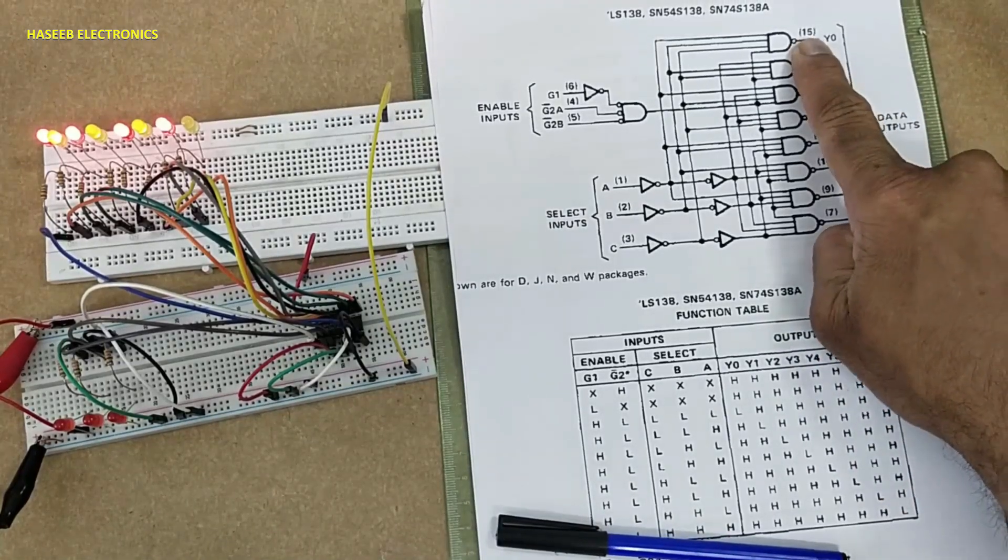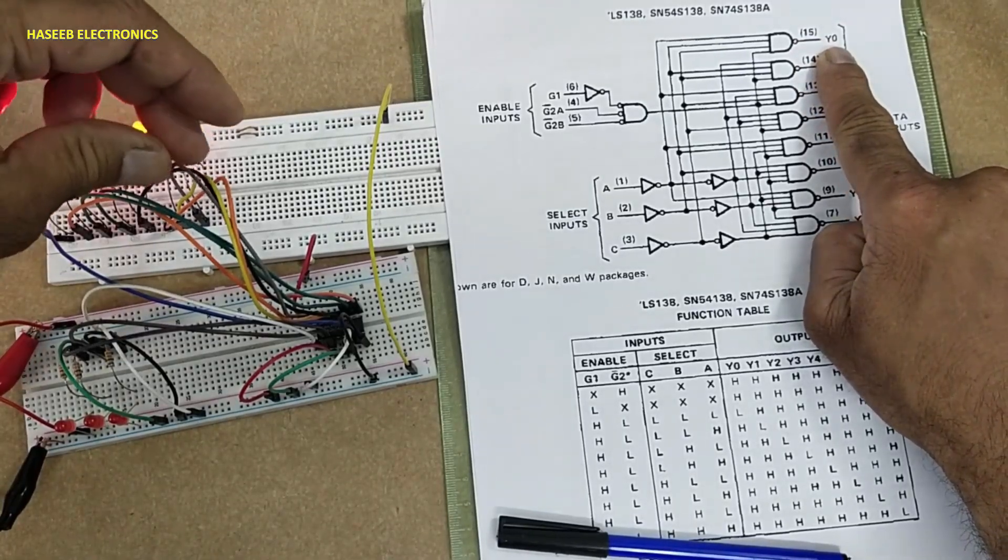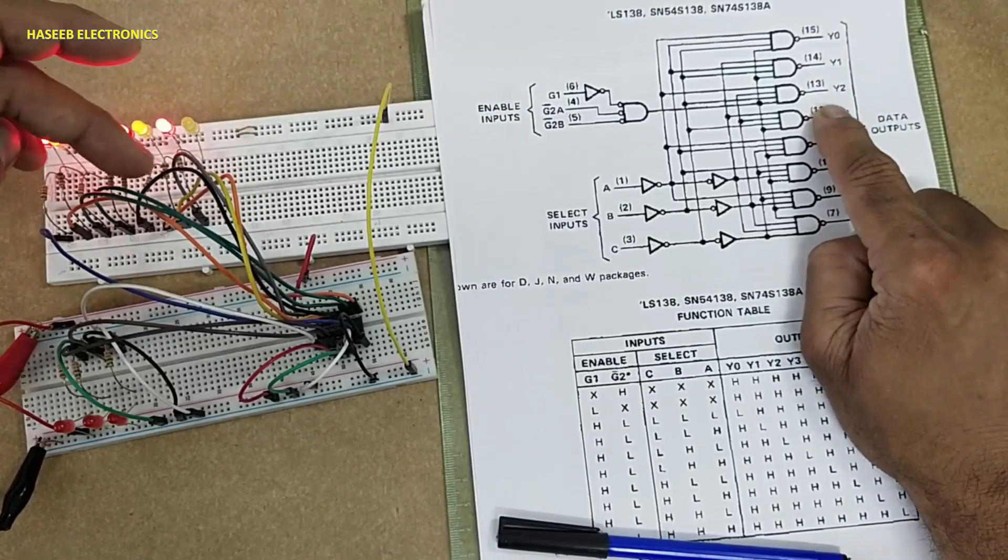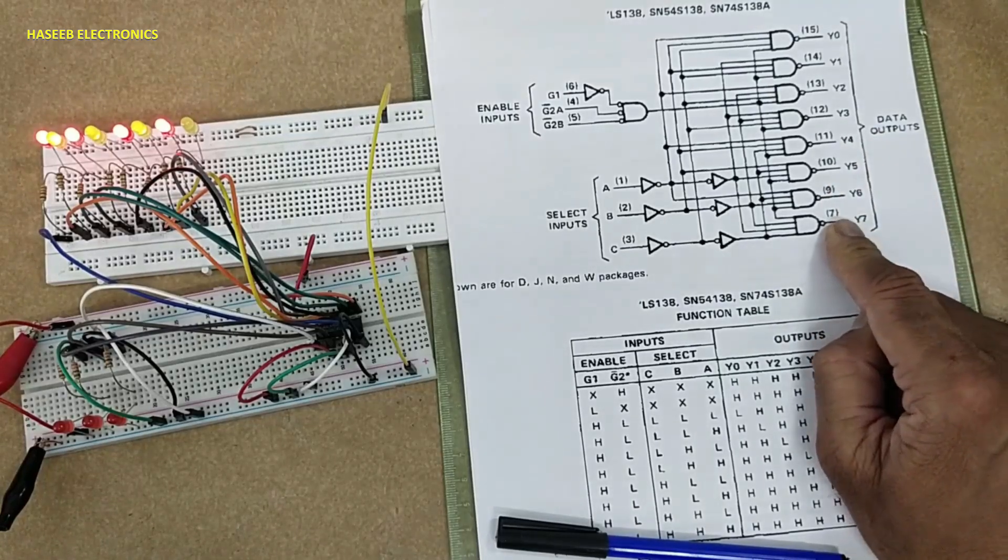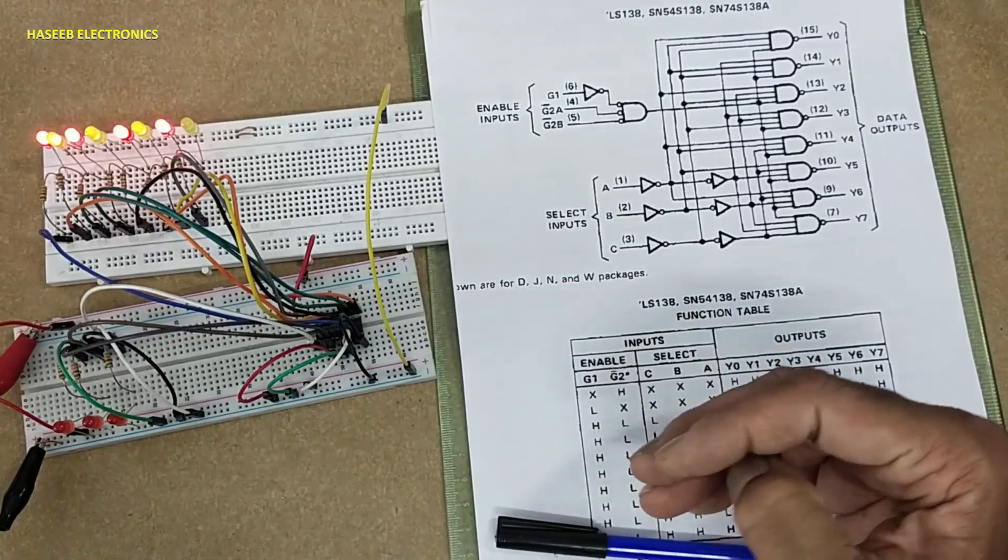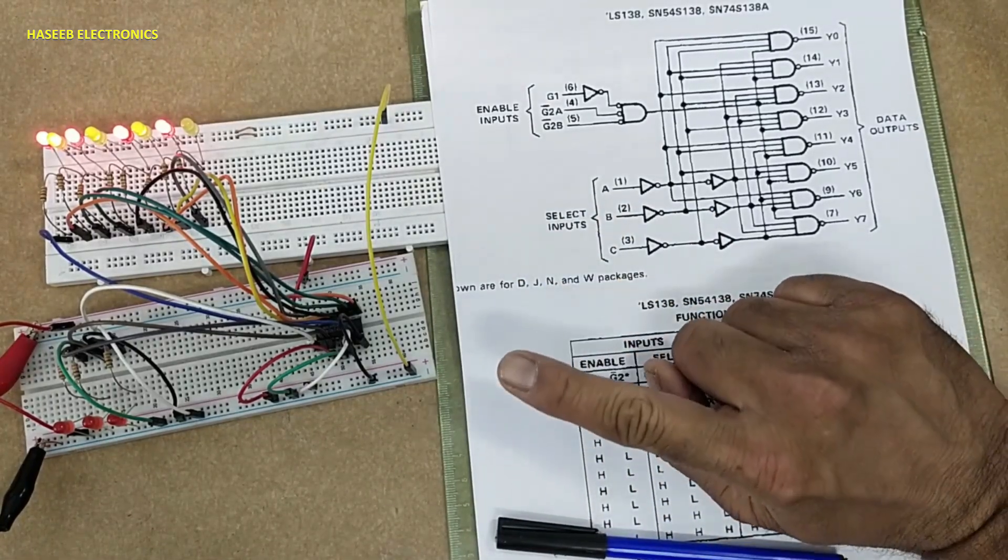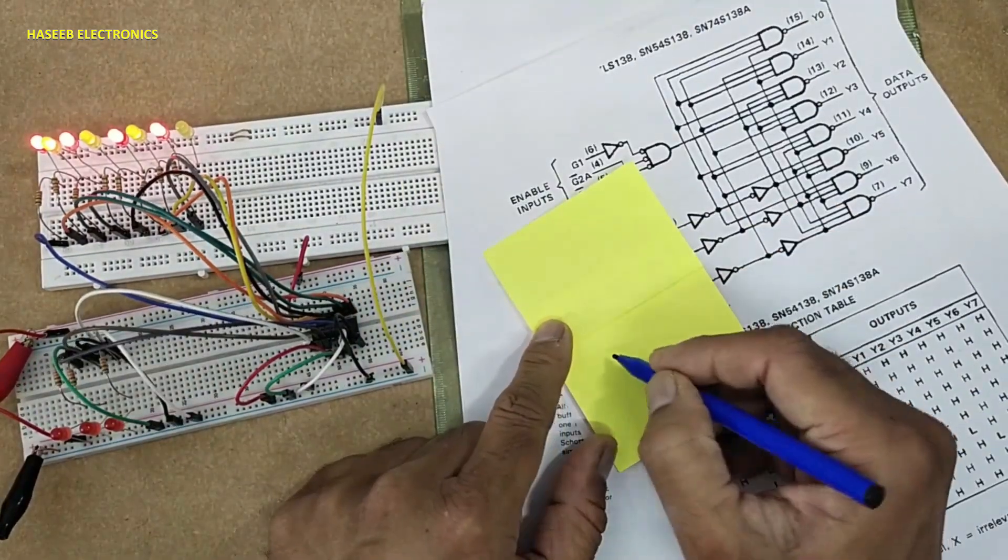From pin number 15, Y0—that is output number zero—then 14, 13, 12, 11, 10, 9, and 7. Pin number 8 is ground. Pin 16 is positive 5-volt power supply. For this TTL IC, 4.75 to 5.25 volts maximum. I connected...